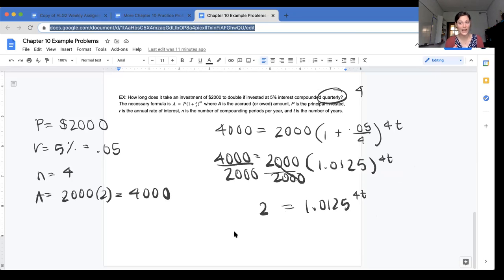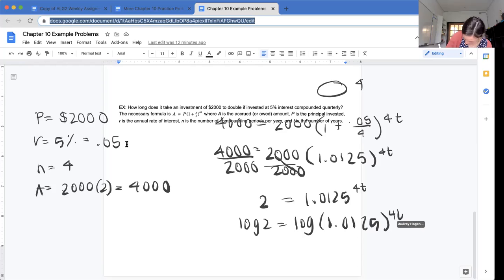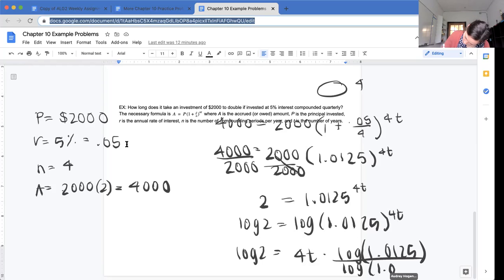And then to solve this, I see that I have a t in my exponent, so I know that I'm going to use that power rule of logs. So I'm going to take the log of each side: log 2 equals log 1.0125 to the 4t, which equals log 2 equals 4t times log 1.0125. I'm going to divide by that log 1.0125 so that I can isolate that 4t.